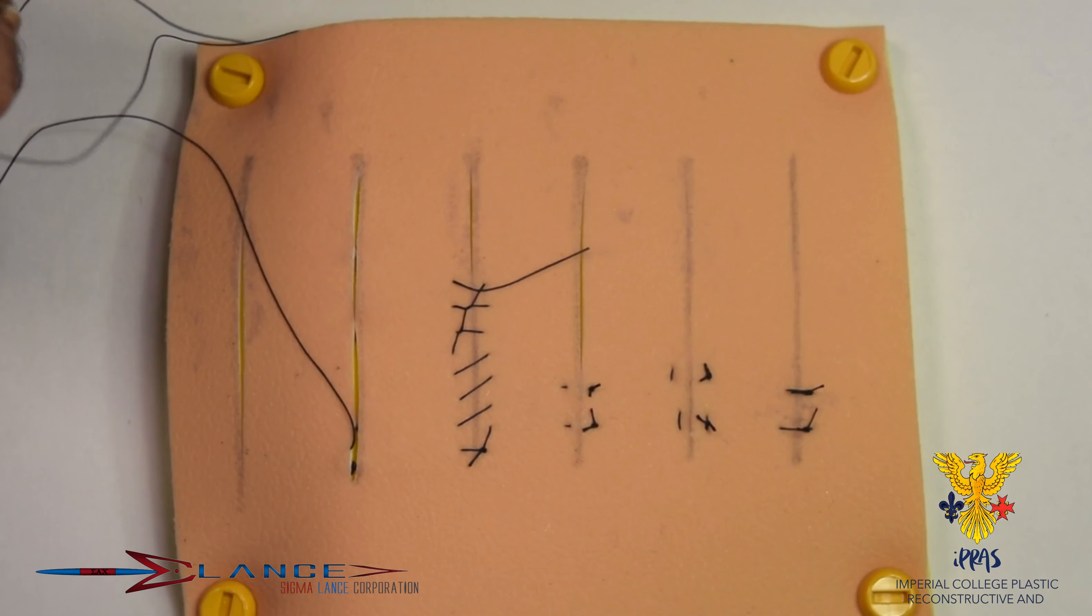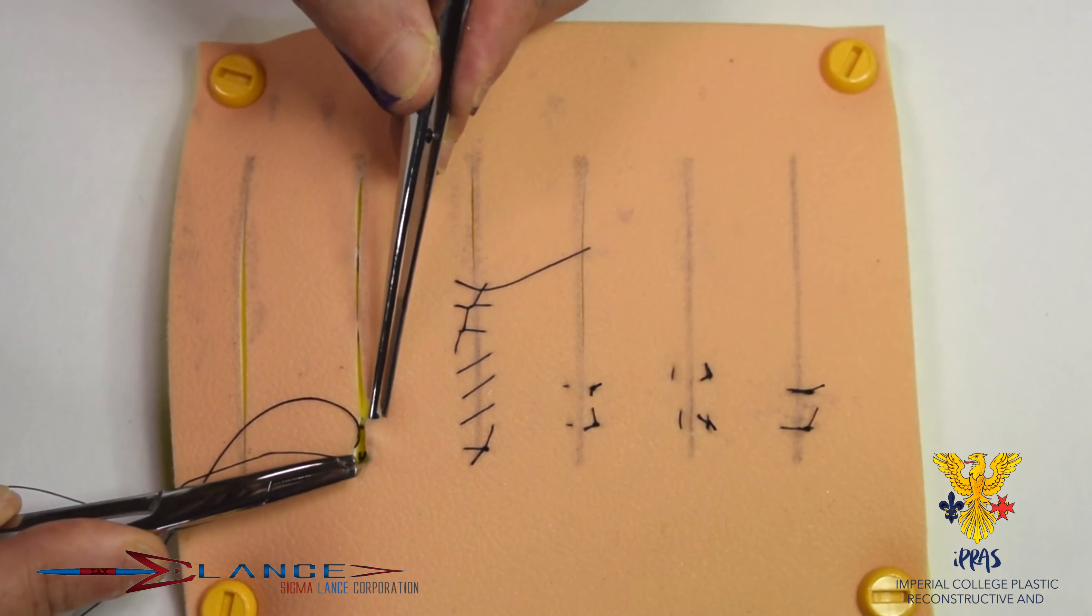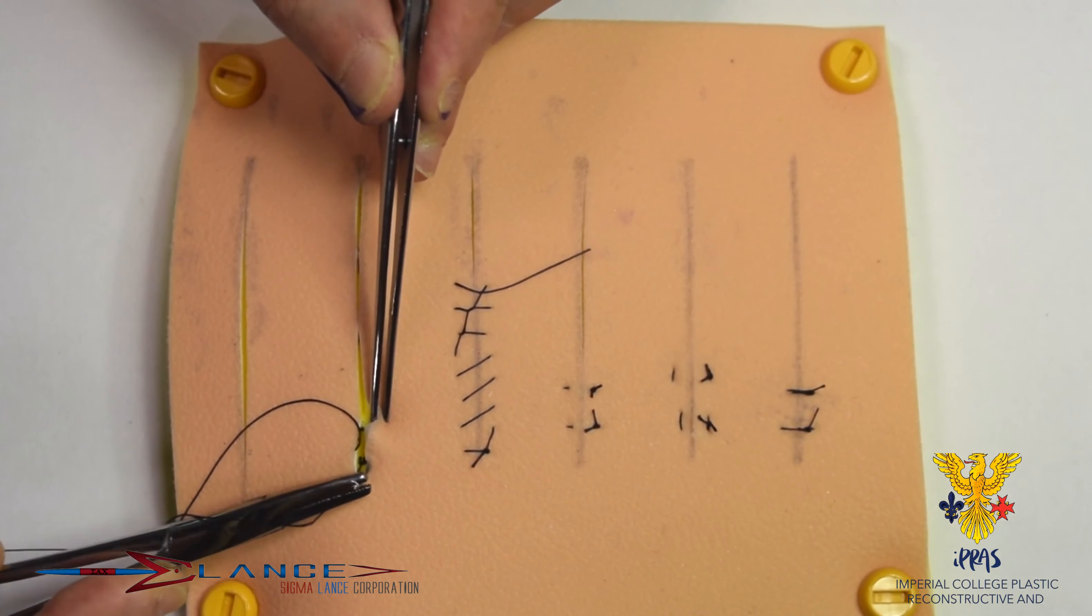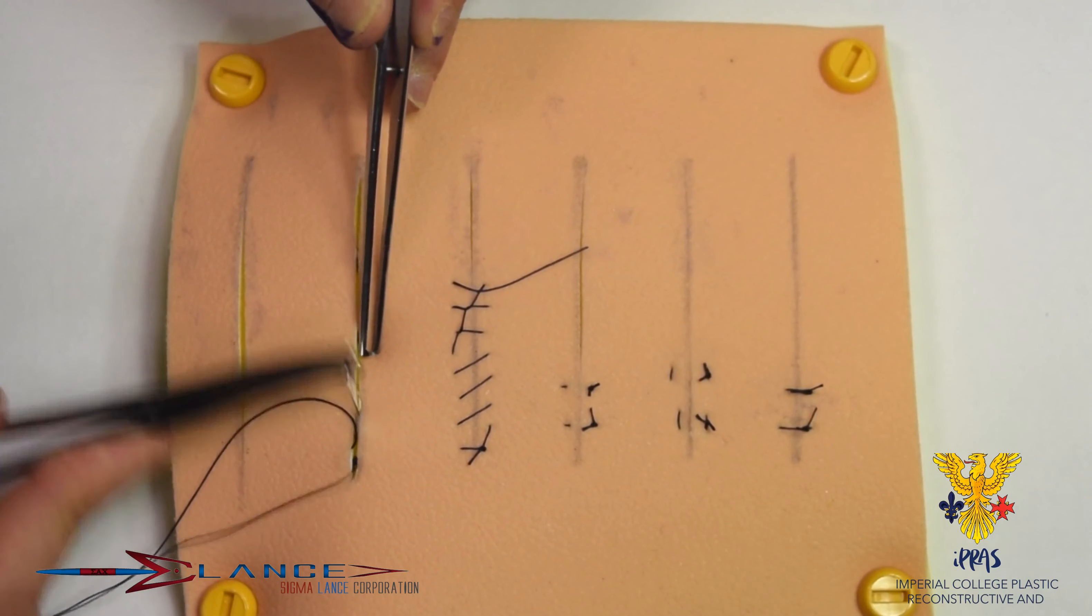You can pull it through every time, or you can pull it through at the end, but generally because this is a braided suture, the silky tentacle will tend to pull it through as you go along, otherwise you'll find it's difficult to pull through. So again, taking square bites.